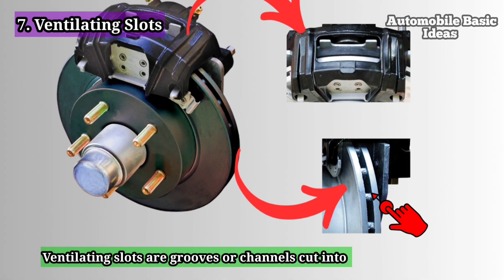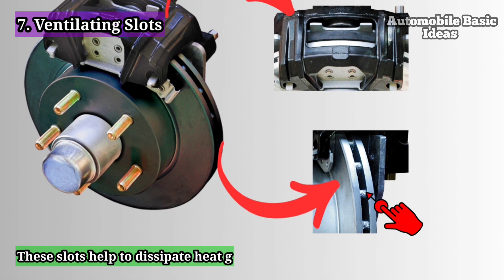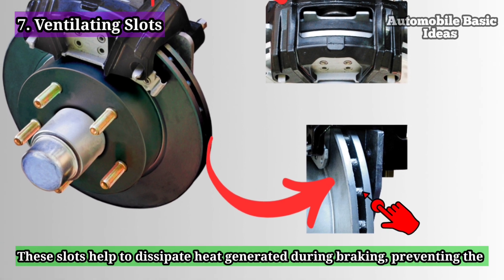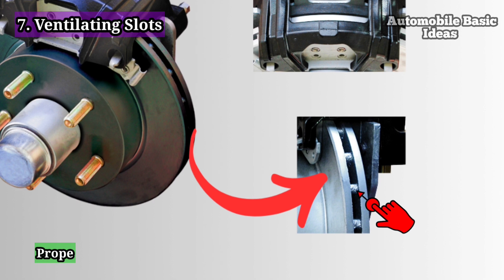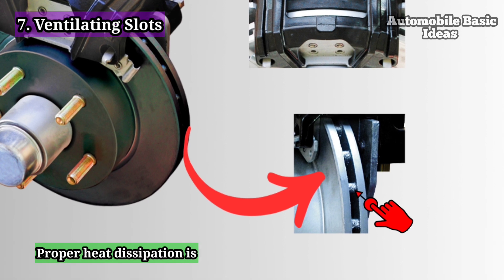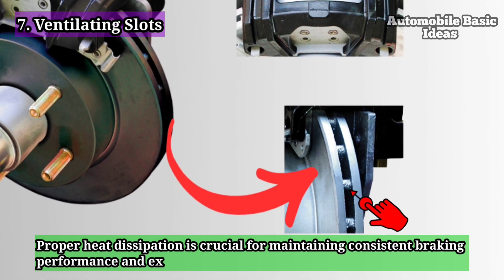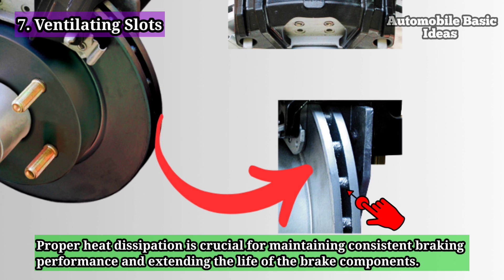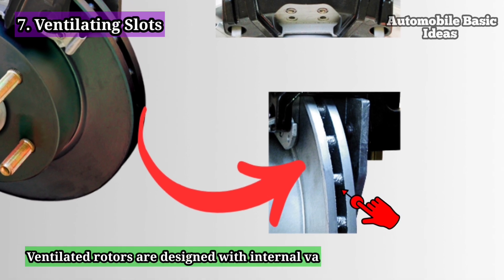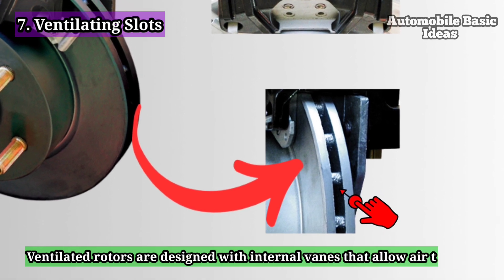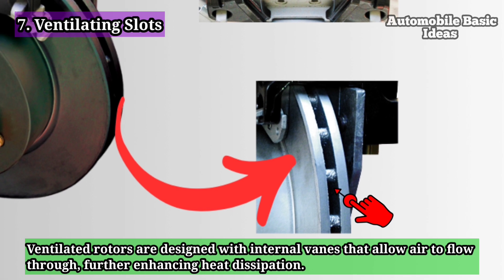Seven: ventilating slots. Ventilating slots are grooves or channels cut into the brake disc. These slots help to dissipate heat generated during braking, preventing the brake disc from overheating and warping. Proper heat dissipation is crucial for maintaining consistent braking performance and extending the life of the brake components. Ventilated rotors are designed with internal veins that allow air to flow through, further enhancing heat dissipation.